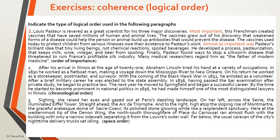Here, a description using expressions which show place, like 'and to the right' and 'straight ahead.' We continue: here, at the westernmost tip of the Denon Wing, the north-south thoroughfare of Place du Carrousel ran almost flush with the building, with only a narrow sidewalk separating it from the Louvre's outer wall.